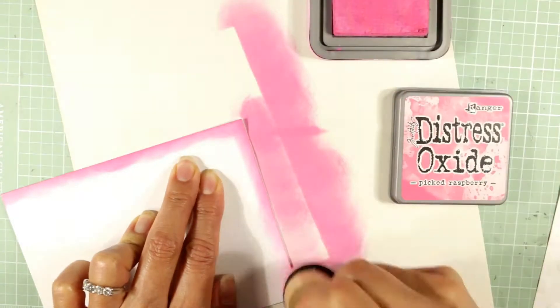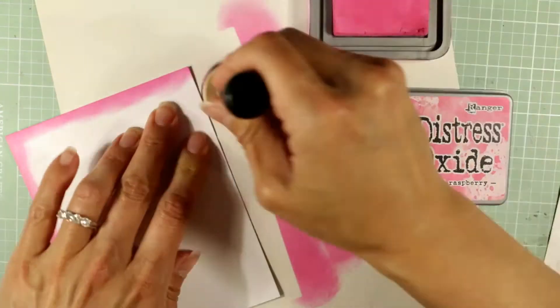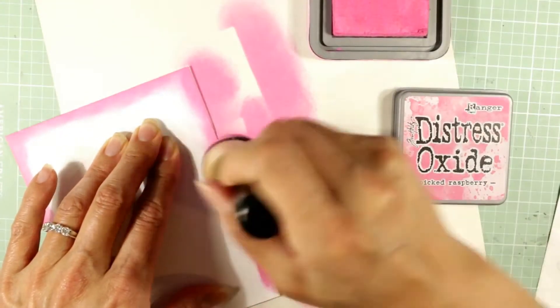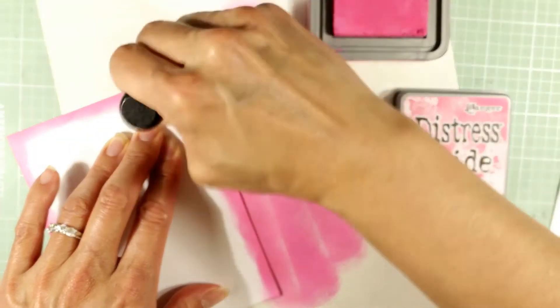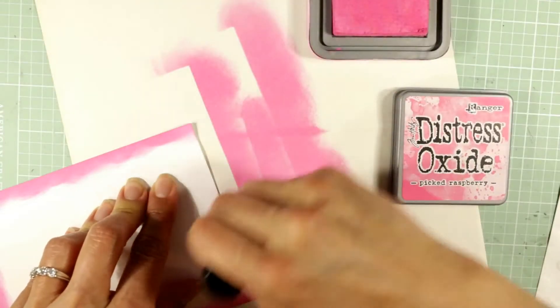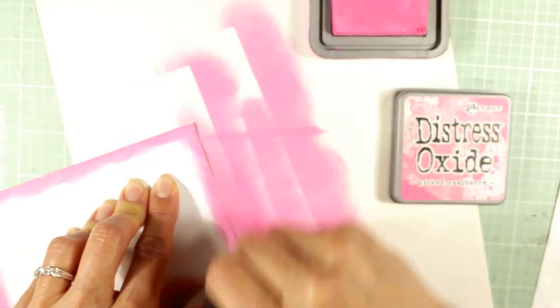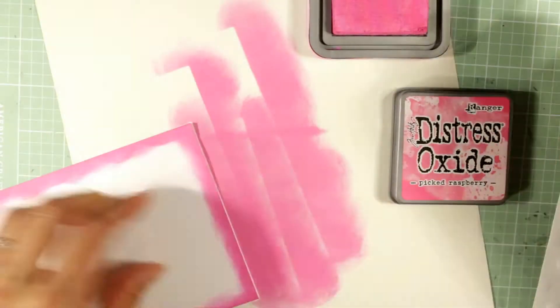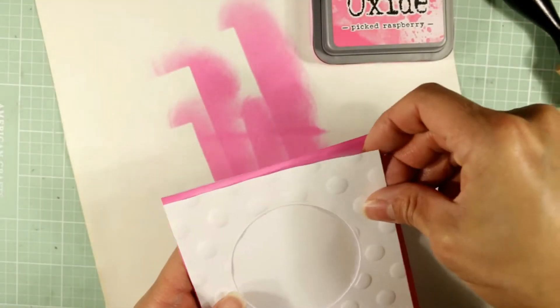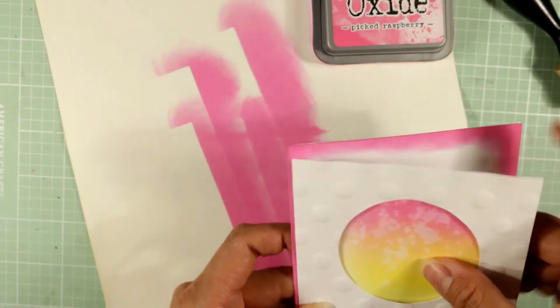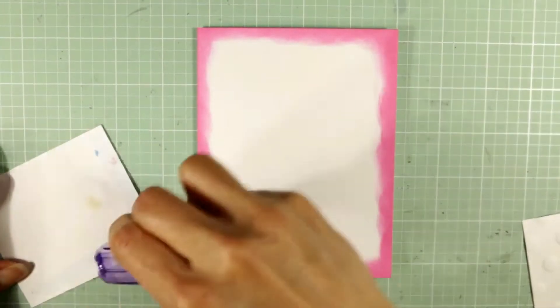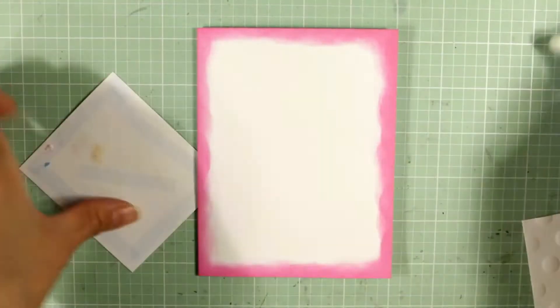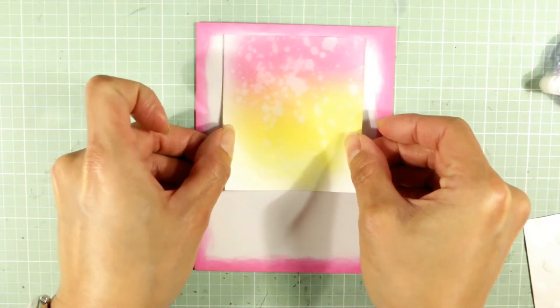Then I decided I'm going to cut down that card front, and I'm inking on some more of that picked raspberry all along the edges of the card base, so I get an exact match in terms of color all around the edge of the card. That card front I made by running my cardstock through an embossing folder. It's a We Are Memory Keepers next level dotted.